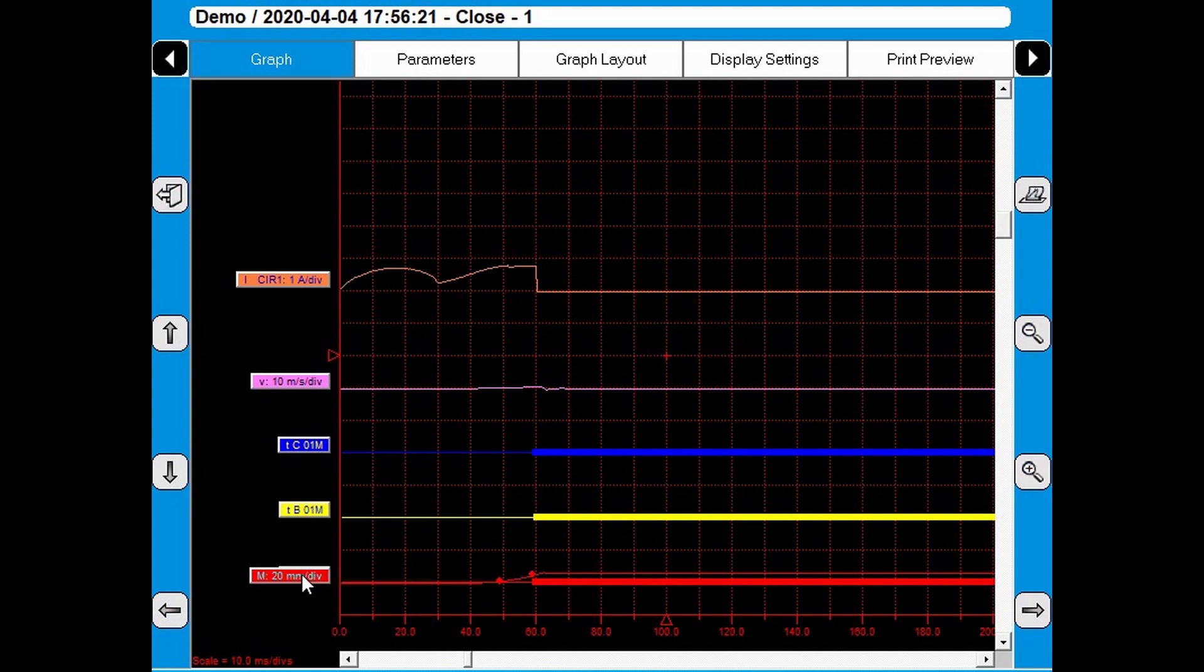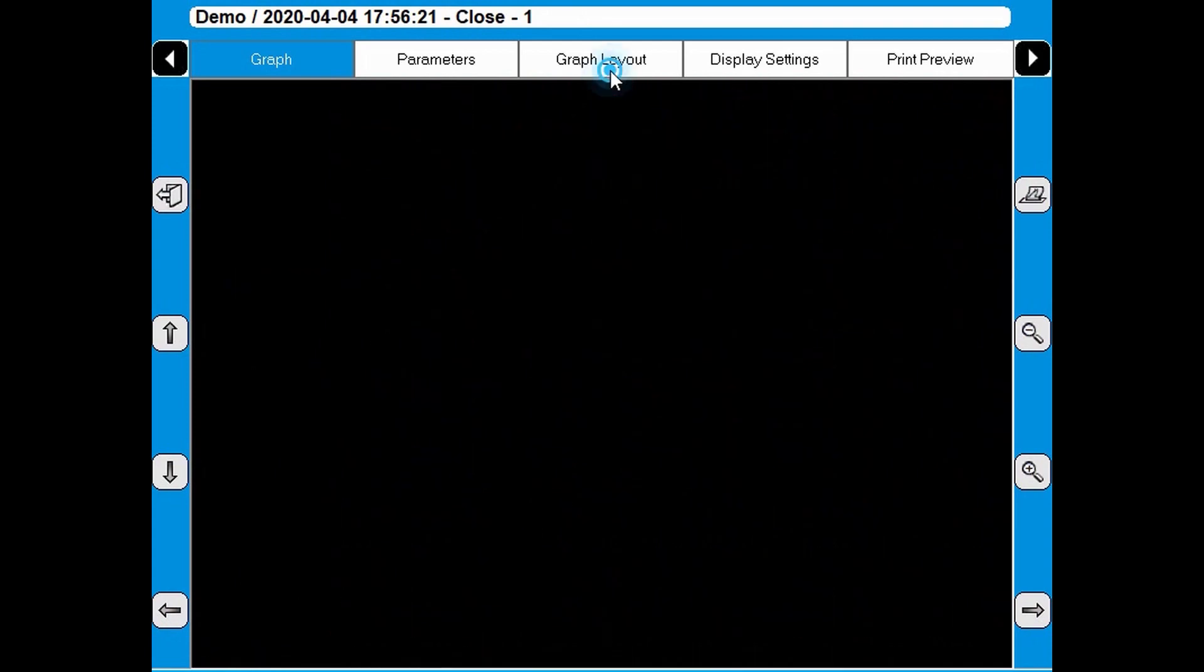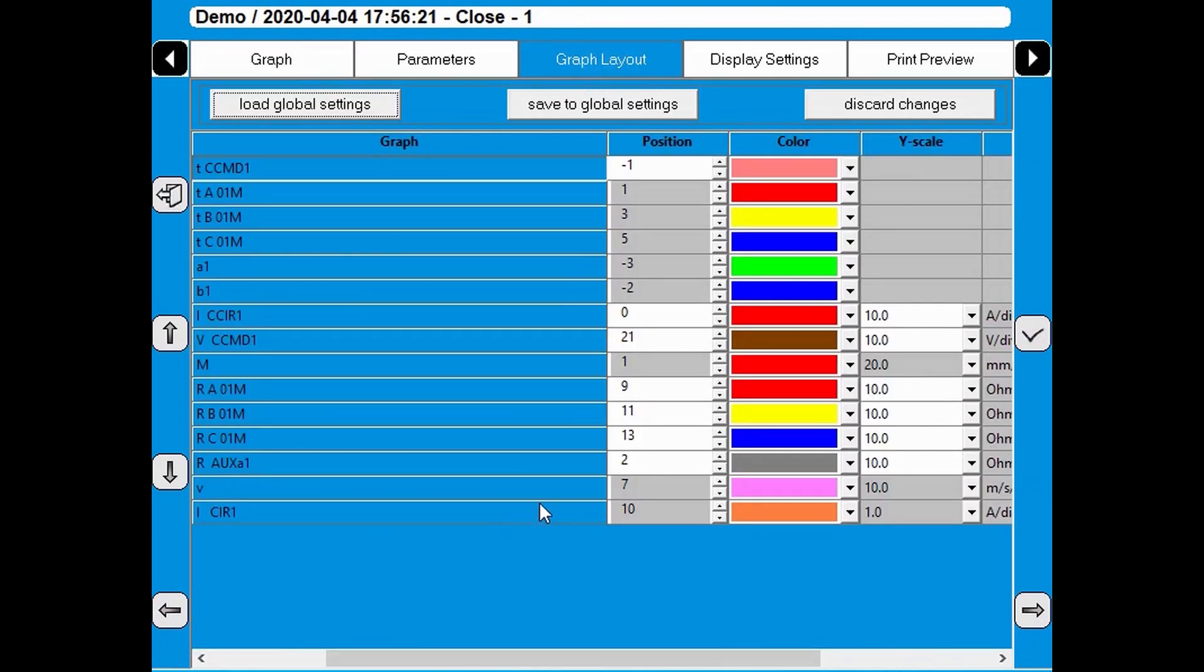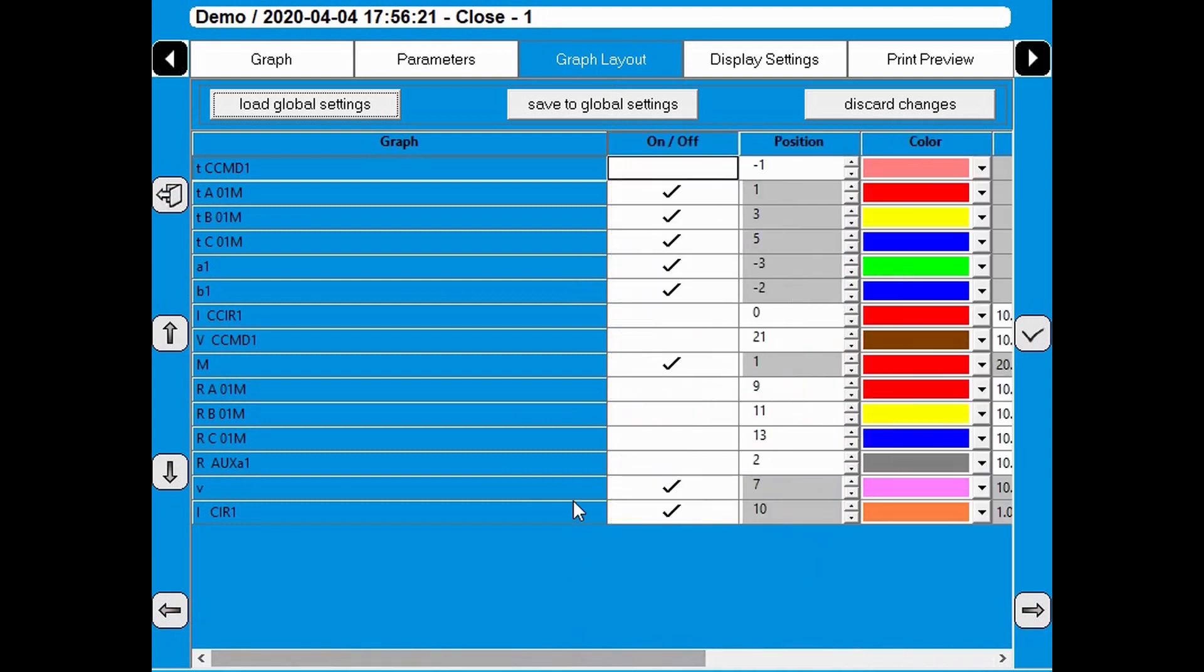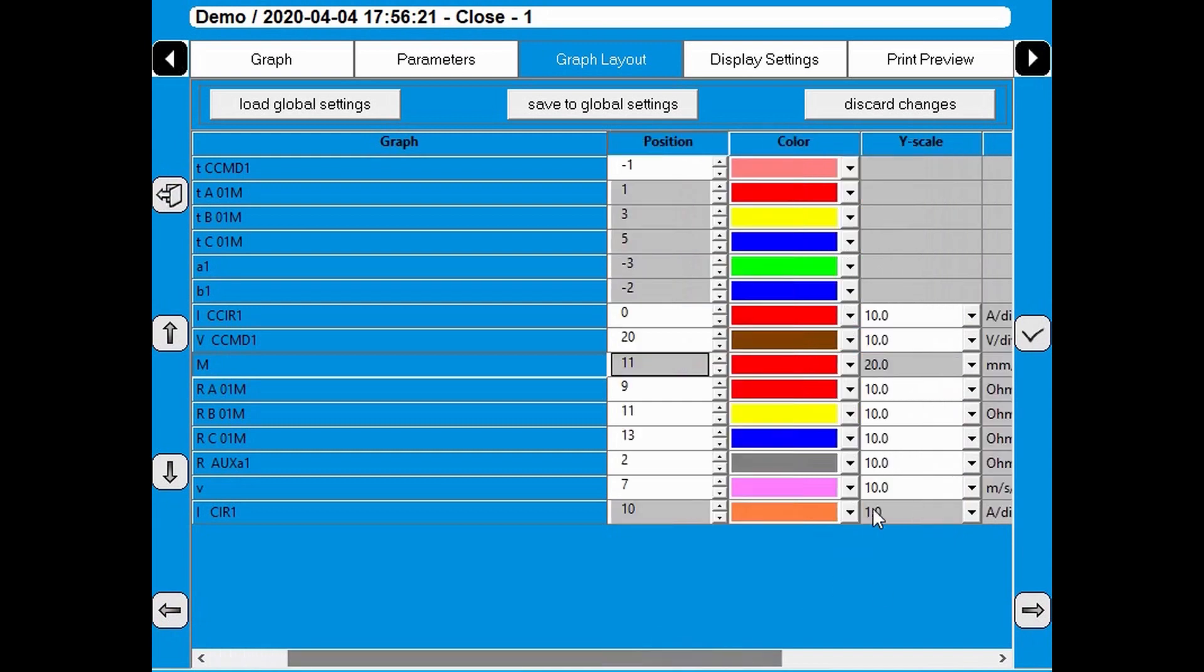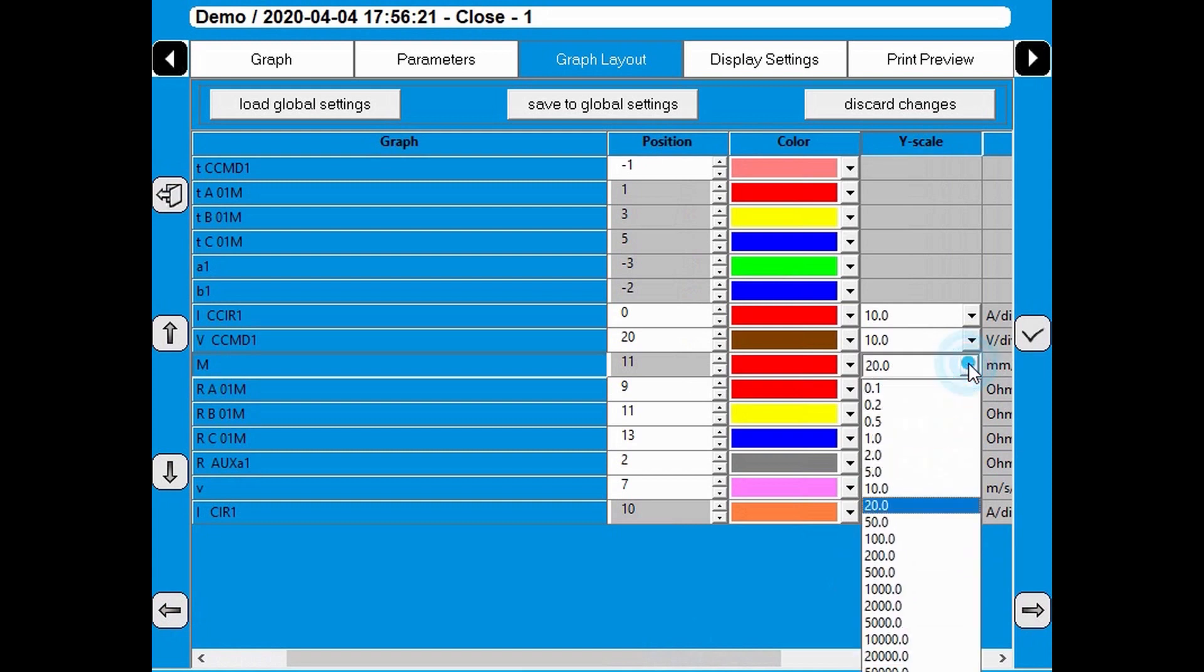I'm going to go to graph layout to do these changes. I turn off the speed. I change the motion, the position, and also the scaling. It's too small. So I want it bigger. So I change to a smaller setting here.